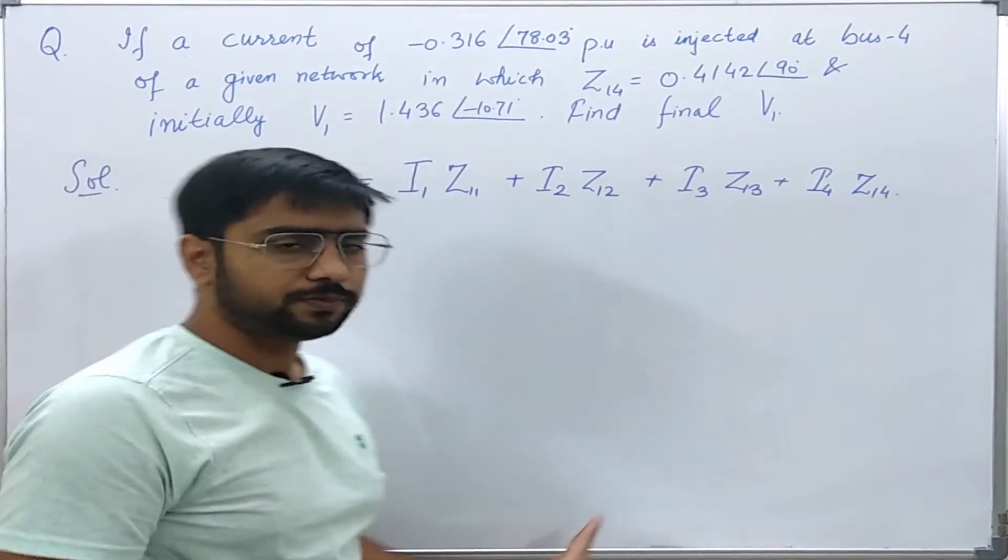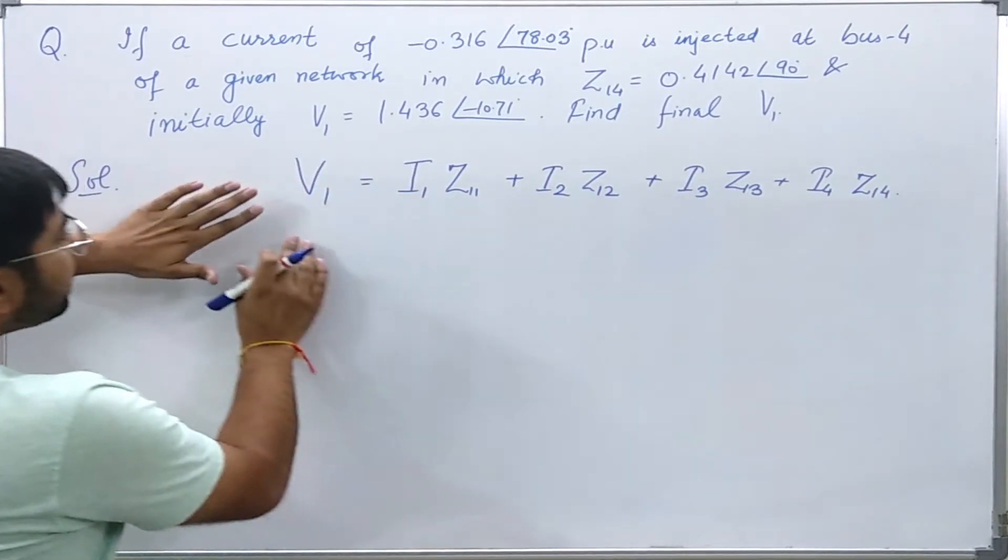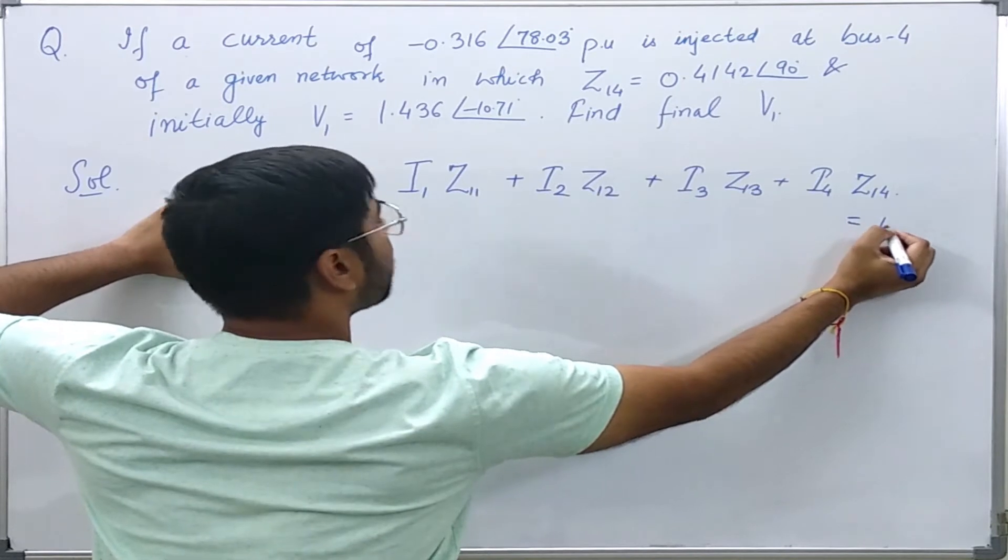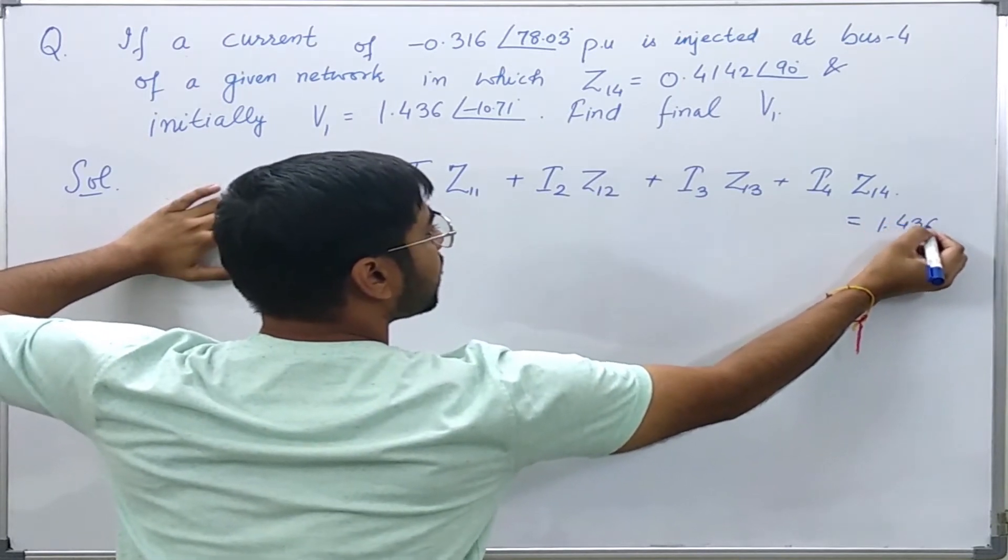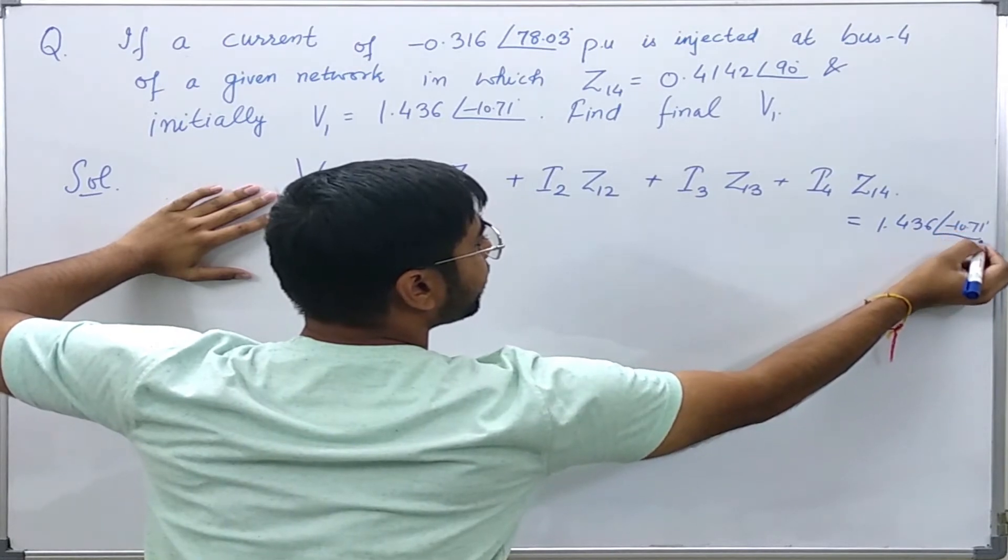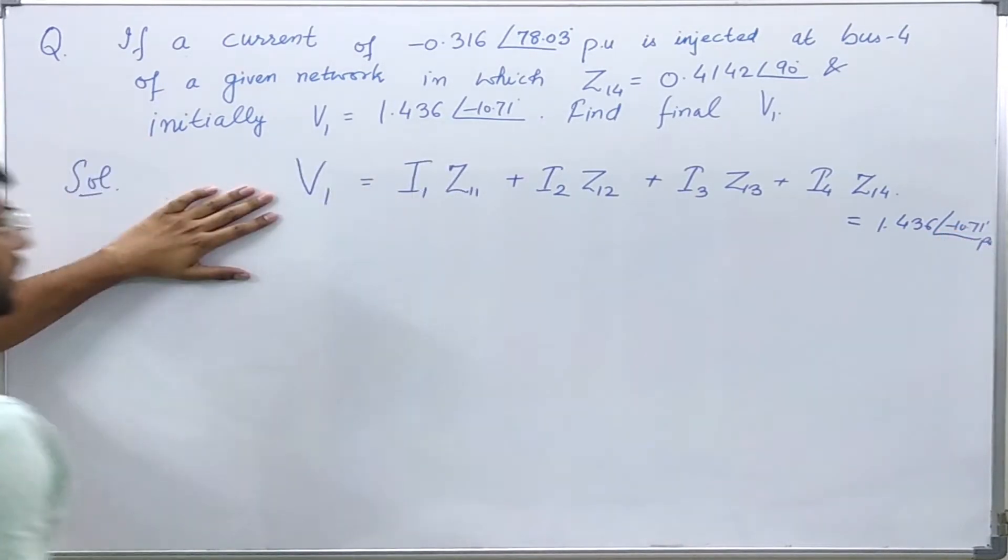Initially, this is given to be 1.436 angle minus 10.71 degrees per unit.